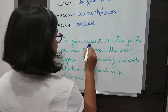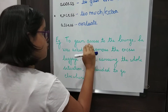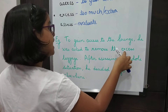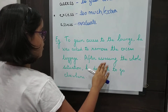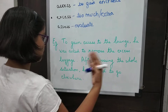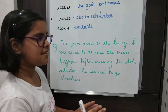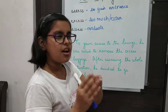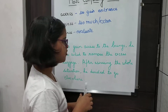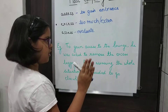Let's revise this. To gain access means to gain entrance to the lounge, he was asked to remove the extra luggage. After evaluating and calculating the whole situation, he decided to go elsewhere. It means that after seeing how much luggage had to leave and how much loss would occur, he decided to go elsewhere.